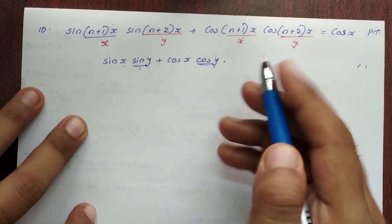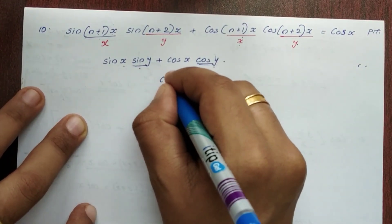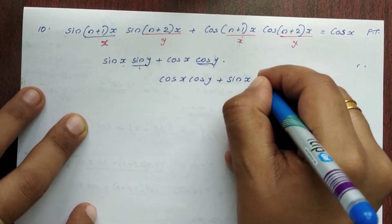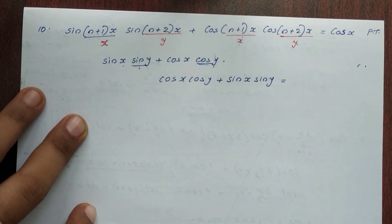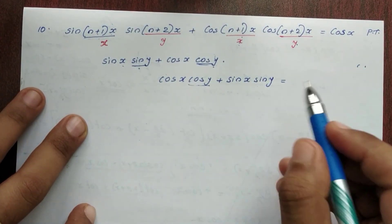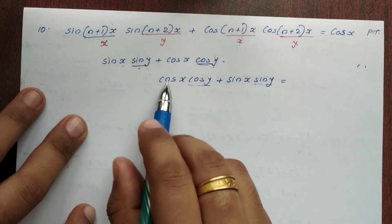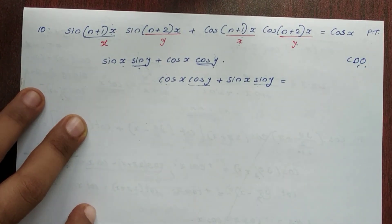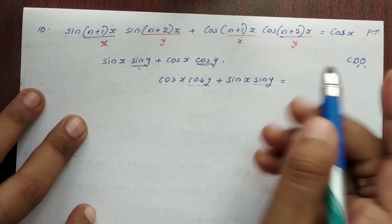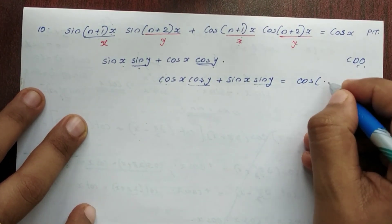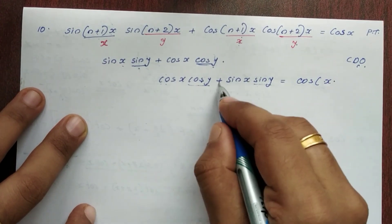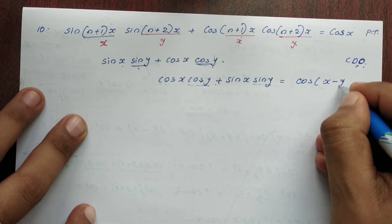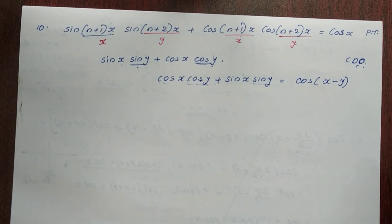This equals cos x · cos y + sin x · sin y. Now cos y will be sin y. We have a shortcut: cos(x + and minus). Using the opposite sign, this gives us cos(x - y). If we can do this, we can apply this trick to any equations.